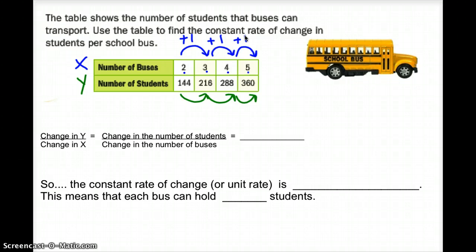If we looked at y, we see that it goes from 144 to 216. To find that increase, you would just find the difference. We find that 216 minus 144 is 72. We see that y increases by 72.